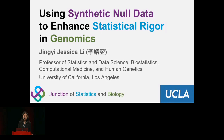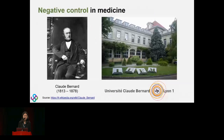I want to open my talk by connecting to Leon. Claude Bernard is a famous physician regarded as one of the greatest French scientists. He proposed the use of experimental medicine, which means that association doesn't imply causation. He said that using negative control is a must, as we have been doing in double-blinded clinical trials nowadays. The connection here is that in Lyon there's a university named after him.